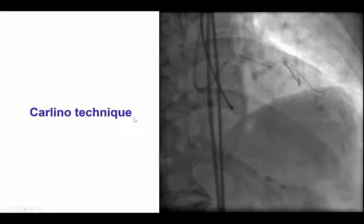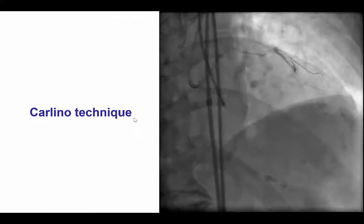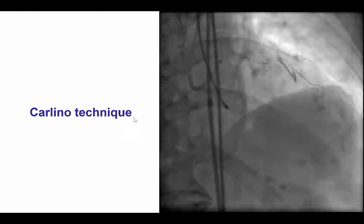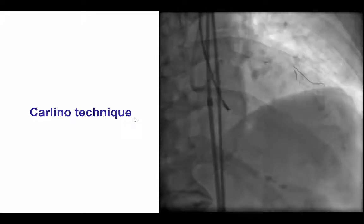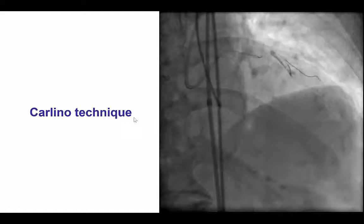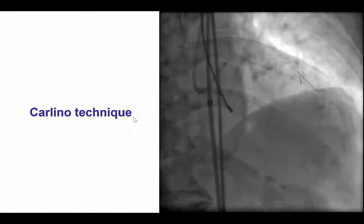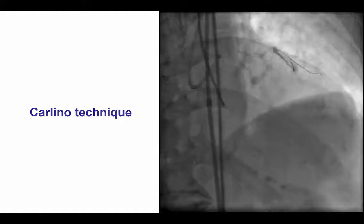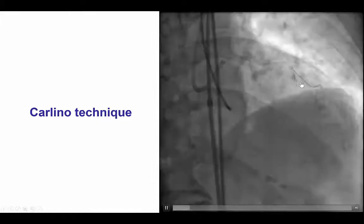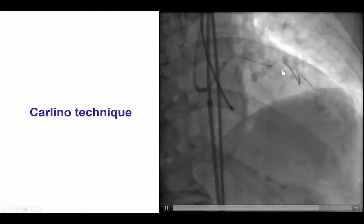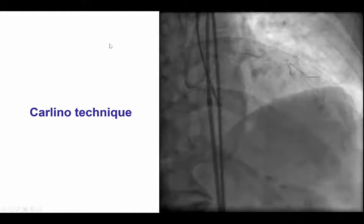In cases like this, one potential solution is to use the Carlino technique, in which a small amount of contrast — usually half to one cc — is injected through a microcatheter that is advanced as far as possible inside the occlusion. In this example, the contrast instead of going forward is going mainly backwards, which can be a problem because it could compromise the flow into the proximal vessel.